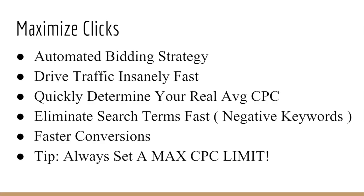You wouldn't necessarily get that data if you used a different bidding strategy. And since maximized clicks focuses on bringing you traffic very quickly, you'll be able to eliminate search terms fast and make them negative keywords very quickly. So Google is bringing you clicks at an accelerated rate, and if you pay attention to your search terms, you'll be able to eliminate all of those irrelevant searches — all those search terms not relevant to your products or your shopping feed — and get rid of those quickly. So when you switch to a new bidding strategy, you don't have to worry about getting useless and worthless traffic.